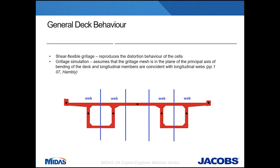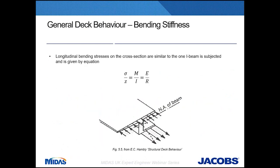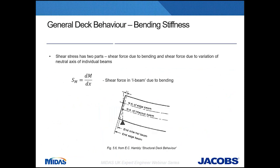For this form of construction we split the deck into seven longitudinal members: four webs, one central slab connecting the boxes, and two dummy members on the parapet upstands. These four longitudinal members containing webs are split so as to replicate the I-beam. Longitudinal bending behaviour can be visualised by notionally cutting the deck between webs into a number of I-beams but without a full bottom flange. The longitudinal bending stresses on these cross-sections will be similar to those of an actual I-beam, as given by the equation shown on the slide.